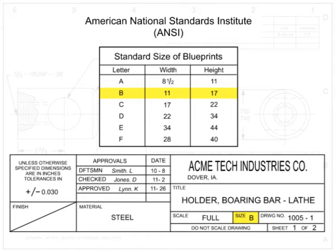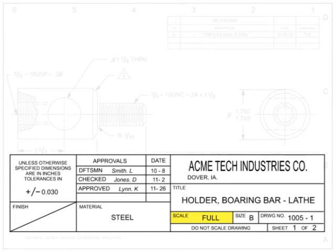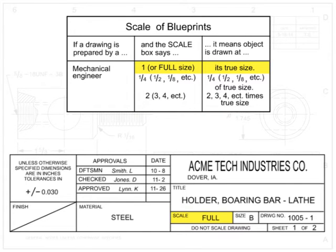The farther in the alphabet the letter, the larger the drawing size. The scale block indicates the size and scale of the drawing. Some items, such as large machines or buildings, are simply too large to be drawn life-size or to scale. Drafters have the choice of drawing things to scale, larger, or smaller than the actual item. The first number on the scale corresponds to the size on the print; the second number is the size of the part. One to one indicates full scale, one to two indicates the drawing is half the size of the actual part, and two to one indicates the drawing is twice the size of the actual part.